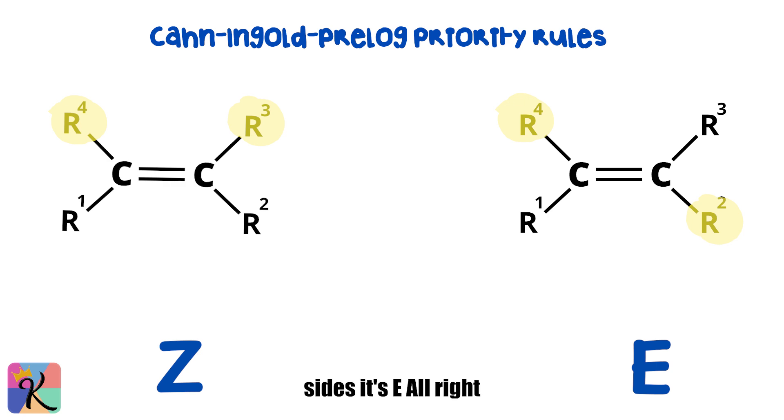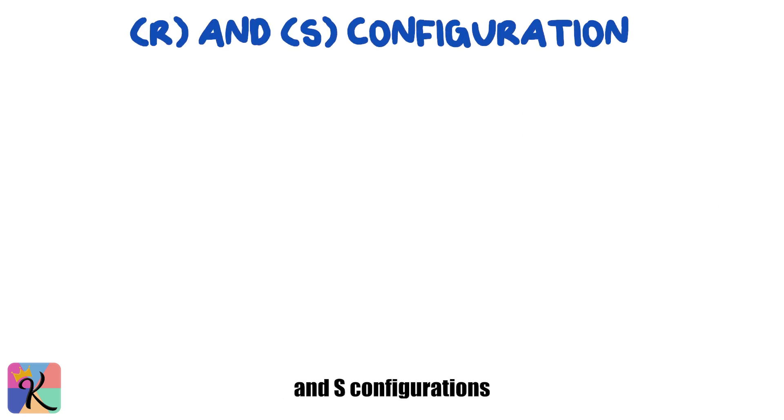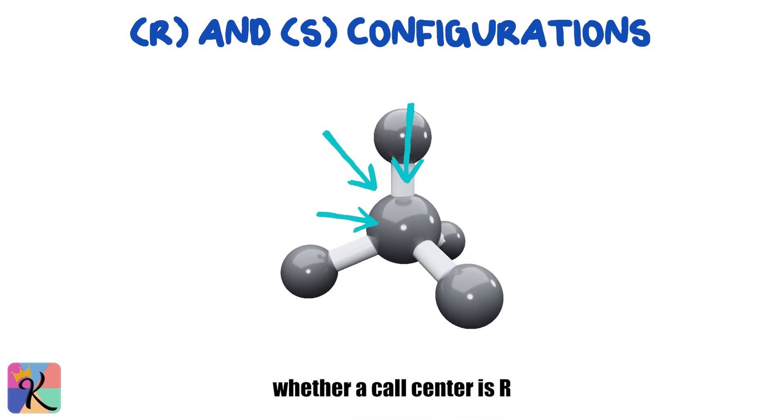Alright, so now let's move on to R and S configurations, which are used for chiral centers. To determine whether a chiral center is R or S, we follow a four-step process.